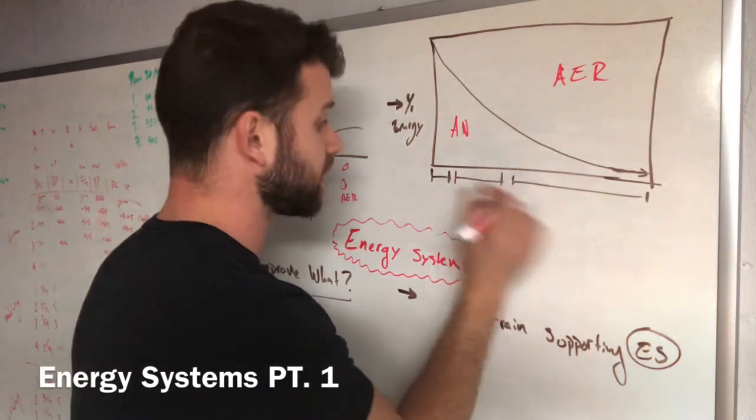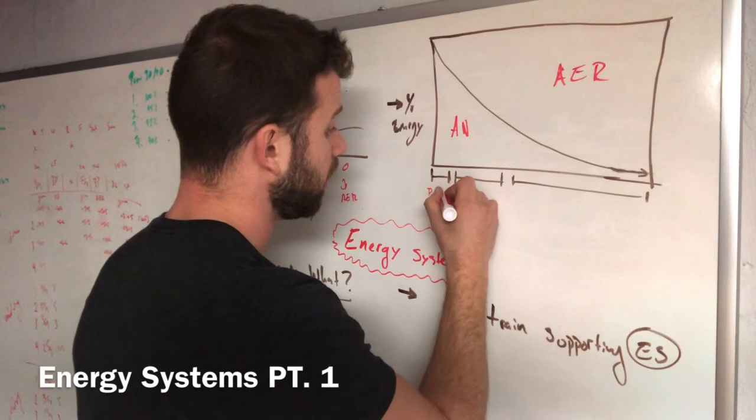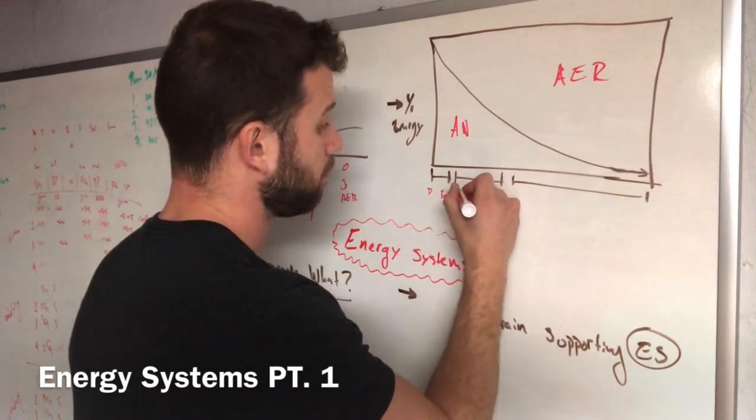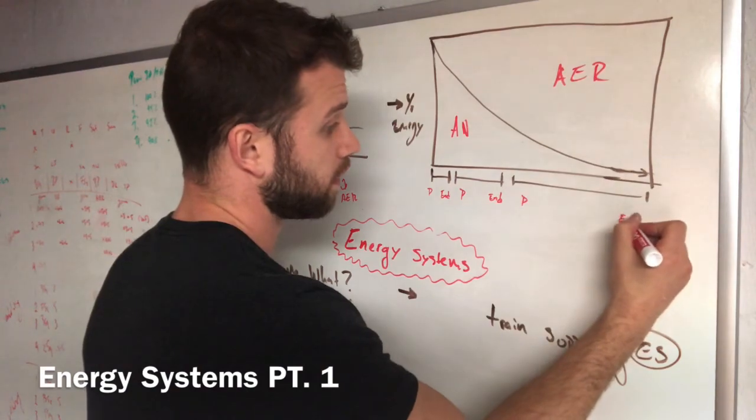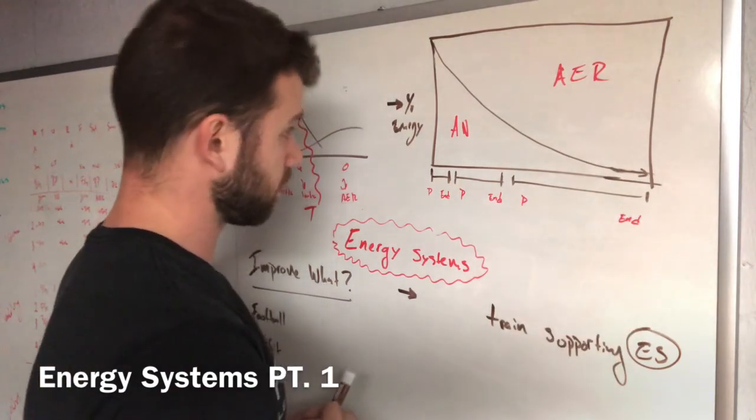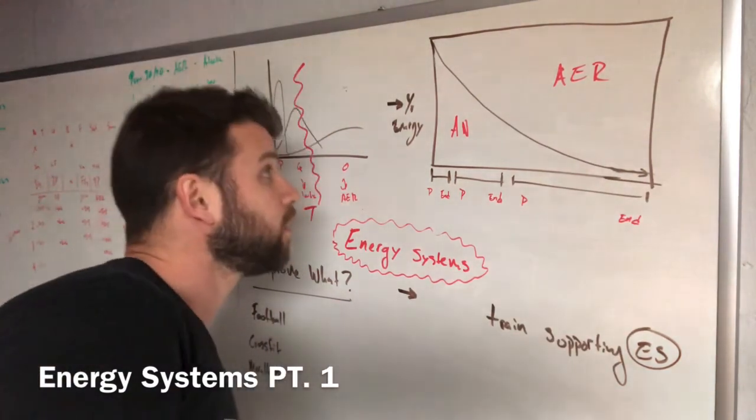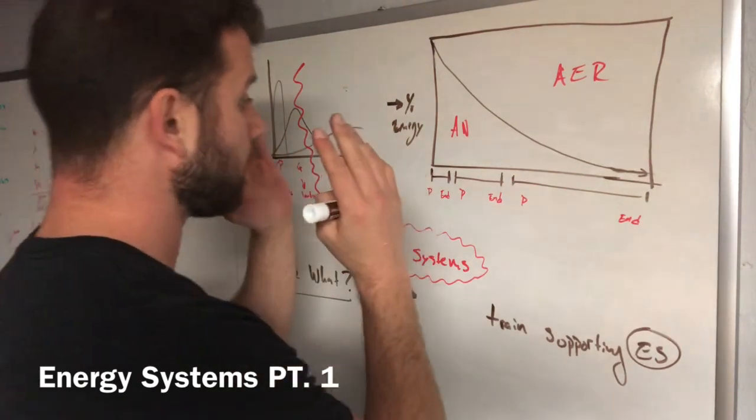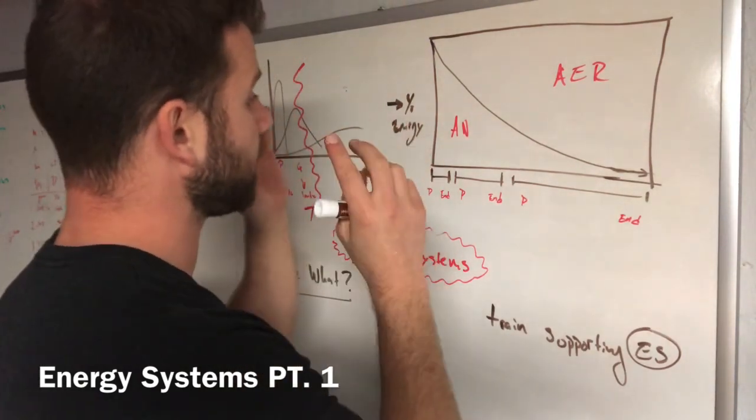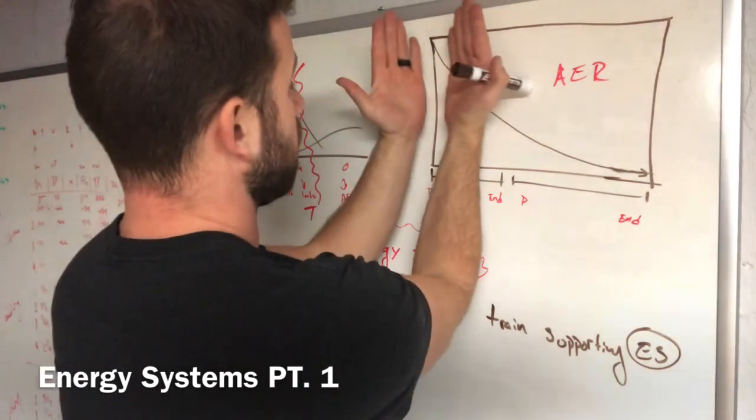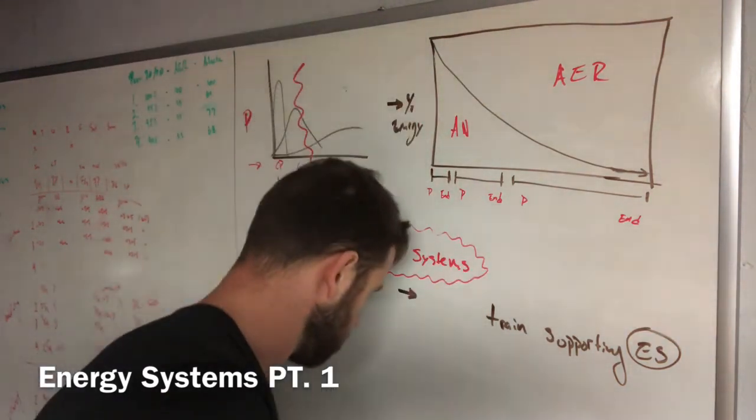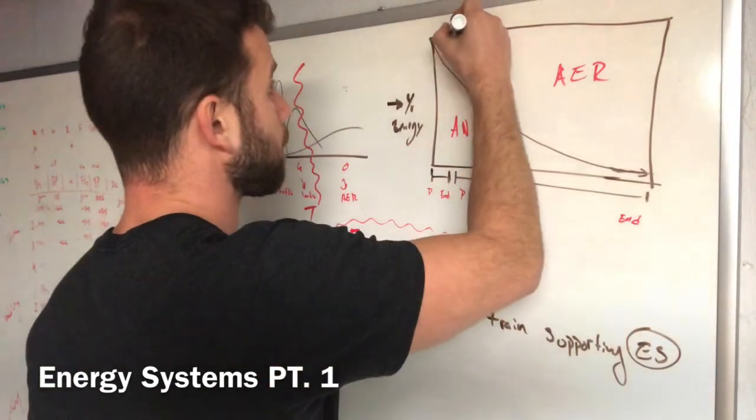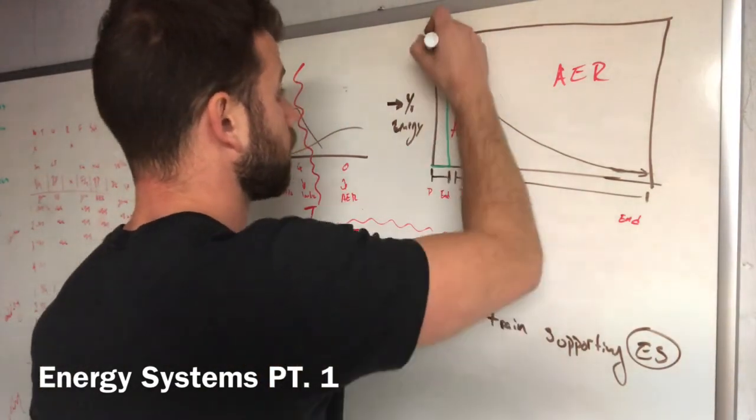So each energy system can be broken up into a power and endurance, power and endurance. So when we look at the high powered creatine phosphate, alactic energy system, that's the slice of pie right there. And we'll use this guy.